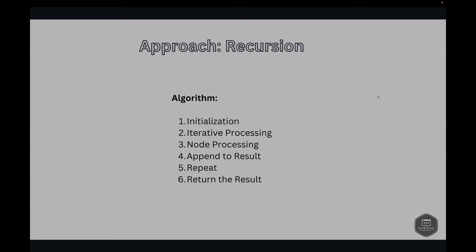Let's look at the algorithm. We start by initializing a queue with the root node, provided that the root is not null. If the root is null, we return an empty list as there are no nodes to process. Then we initialize an empty list called result that will store the list of node values from each level.